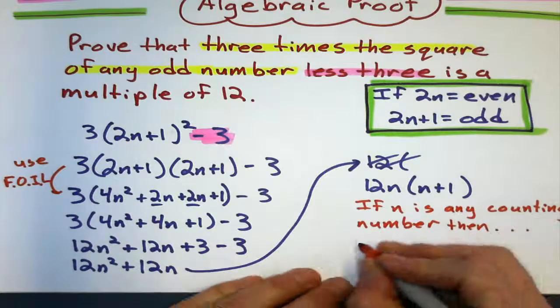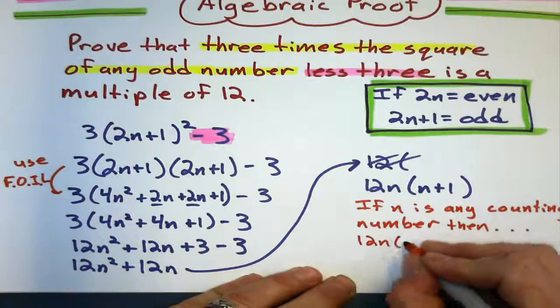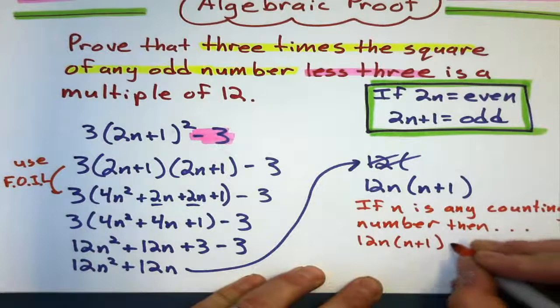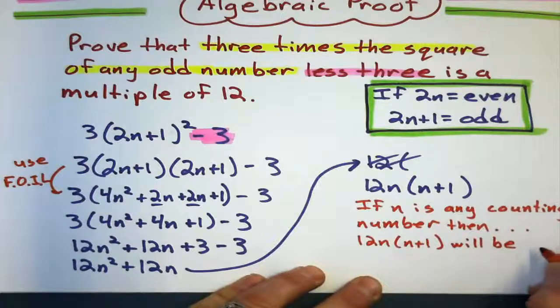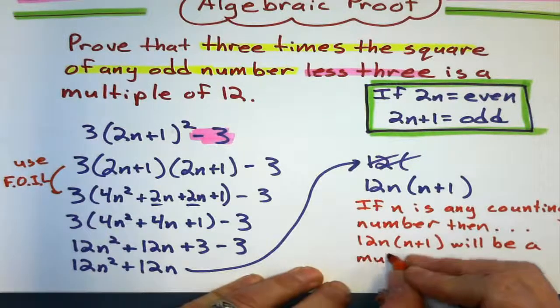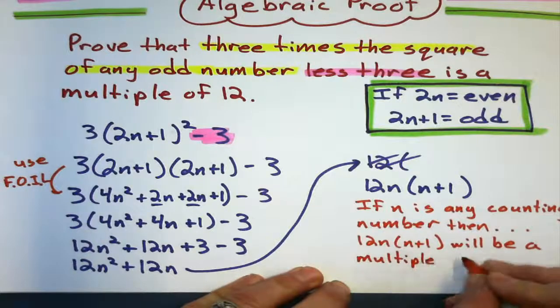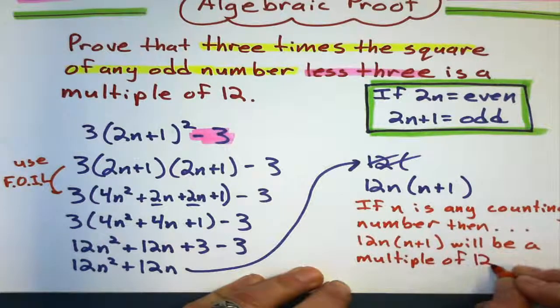Then, dot dot dot, 12n times n plus 1 will be a multiple of 12 or divisible by 12. Whatever you want to say. Will be multiple of 12.